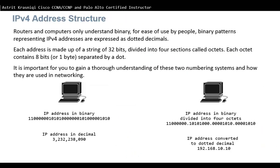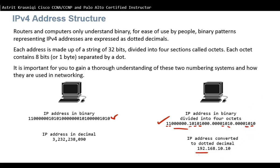IPv4 is 32 bits and IPv6 is 128 bits. IPv4 is divided into four octets for human readability — computers still see it as 32 bits. For example, the first octet 11000000 is 128+64 = 192, the next is 128+32 = 160, then 128+8 = 168, and the last is 8+2 = 10. It's very important to understand both binary-to-decimal and binary-to-hexadecimal conversion, which will be covered in the next video.